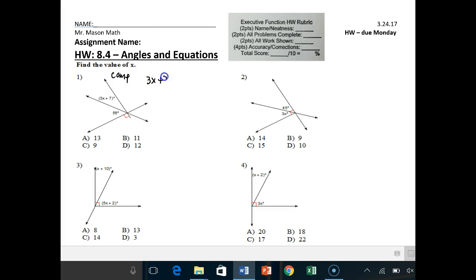3x plus 7 plus 56 have to add up to 90 degrees. This angle plus this angle have to give you 90. You first combine like terms and you get 3x plus 63 equals 90. We then subtract 63 from both sides and we get 3x is equal to 27. Divided by 3, we get our answer as x is equal to 9.